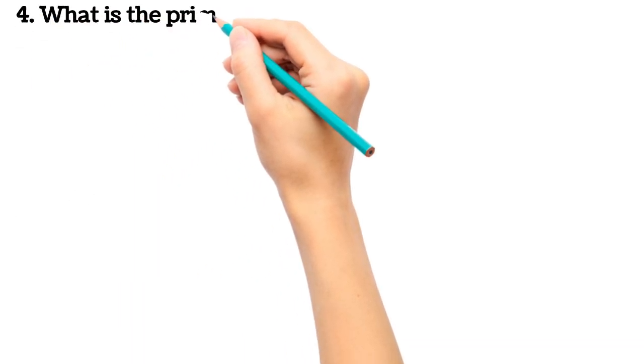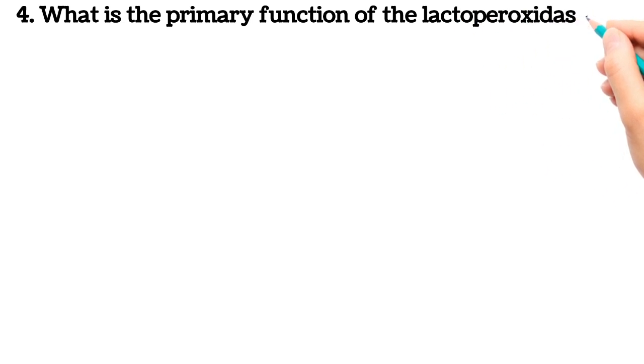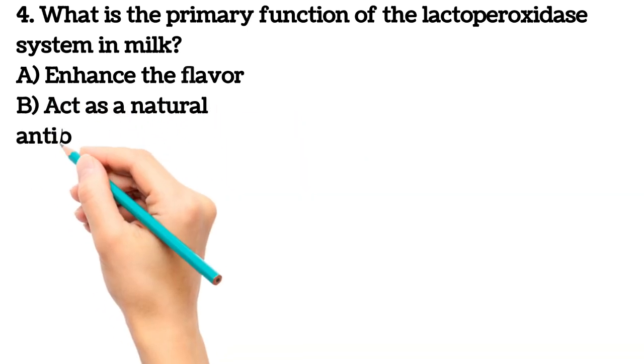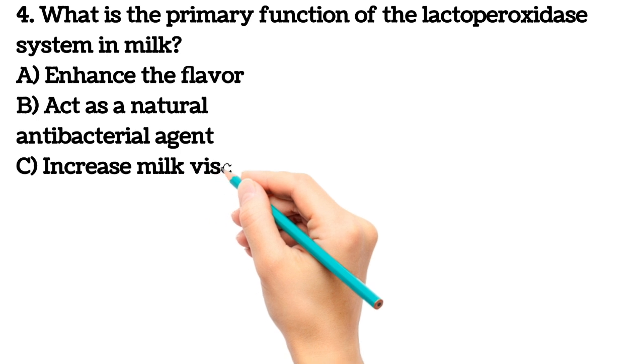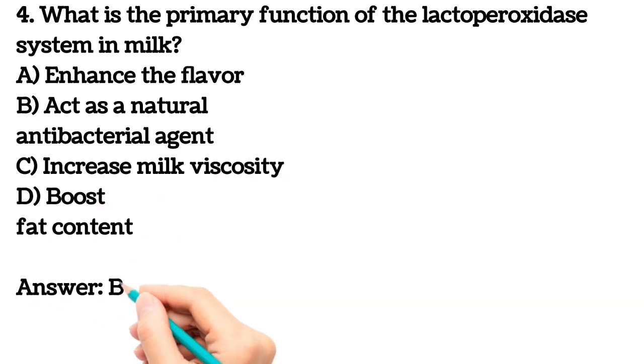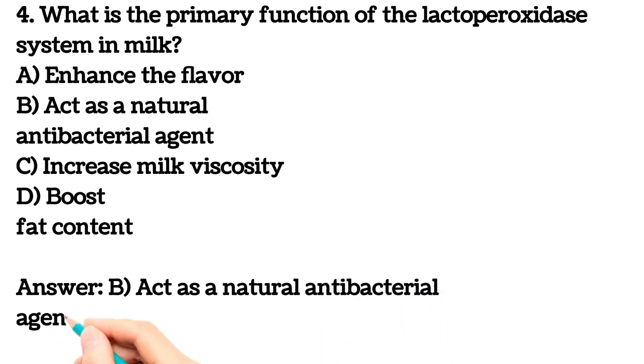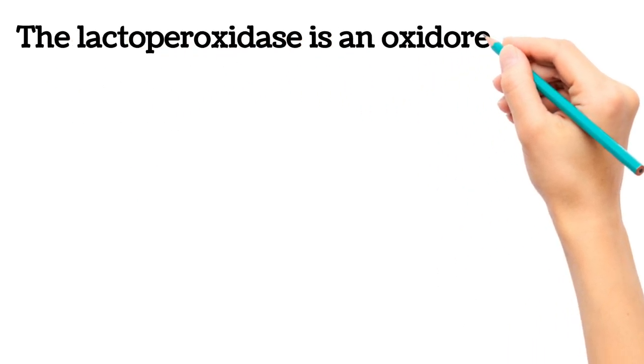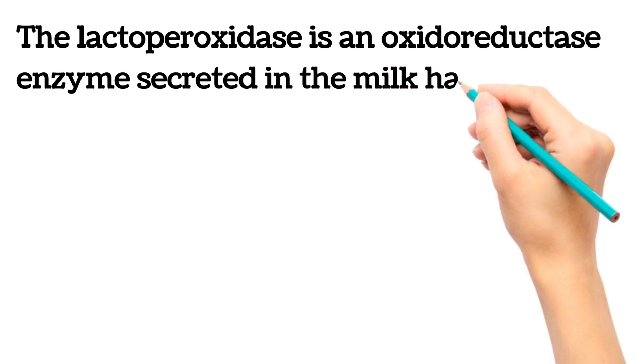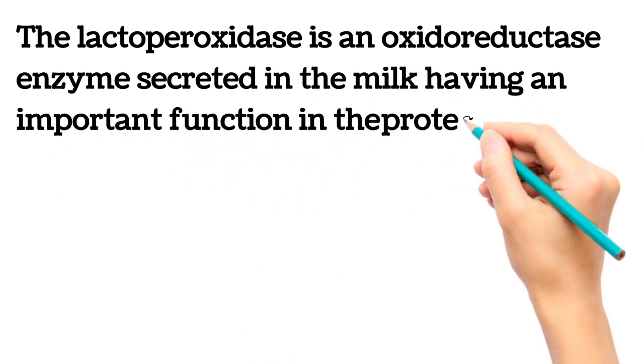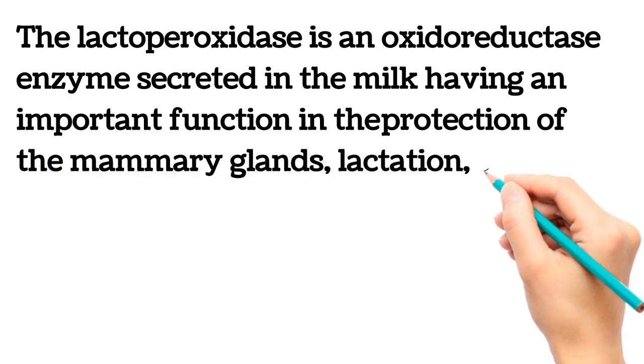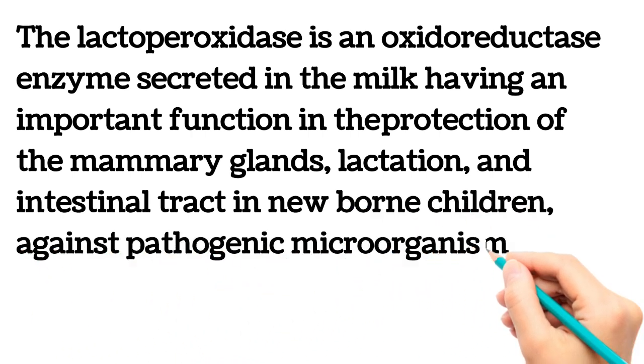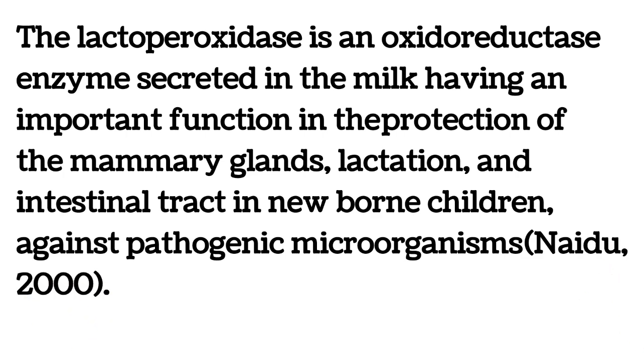Next question. What is the primary function of the lactoperoxidase system in milk? A. Enhance the flavor B. Act as a natural antibacterial agent C. Increase milk viscosity D. Boost fat content. Here answer is B, act as a natural antibacterial agent. The lactoperoxidase is an oxidoreductase enzyme secreted in the milk having an important function in the protection of the mammary glands, lactation and intestinal tract in newborn children against pathogenic microorganisms. It is a paper cited Naidu, 2000.